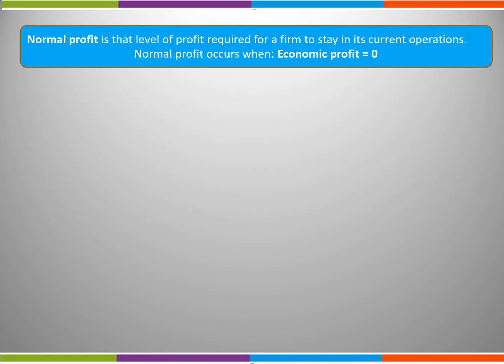Normal profit is that level of profit required for a firm to stay in its current operations. Normal profit occurs when economic profit equals zero. Suppose the firm had undertaken some research into costs, revenues and profits in order to decide whether it should change from wooden furniture to bespoke window frames.